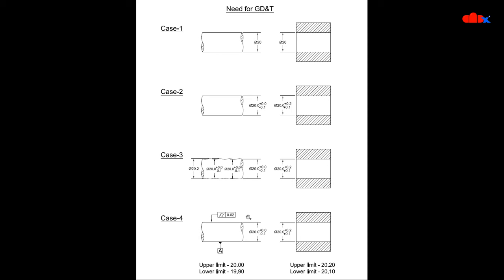In case 4, I have general dimensioning and tolerancing combined with GD&T. When you implement GD&T, you minimize rejection and correct all your components. Now you understand the need of GD&T and the difference between general dimensioning and tolerancing and geometric dimensioning and tolerancing. This was the first part. Now let's move to the second part — the step by step approach to do GD&T.